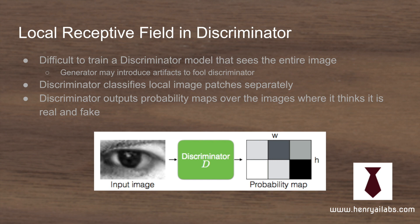Another idea they use is the local receptive field in the discriminator, also called a patch discriminator in other papers. Having the discriminator look at the whole image is currently difficult to make work, so instead they have the discriminator look at local patches and classify the realism of those local patches. Rather than outputting a single real/fake scalar, they make it convolutional all the way through, and it outputs a feature map indicating which patches it thinks are real and fake.